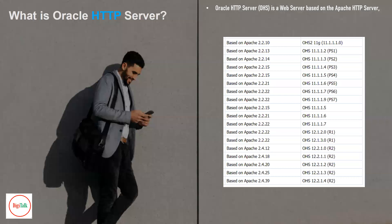Basically, in an enterprise world, we have a web server sitting in front of your application server, like Oracle WebLogic Server. It is used in front of your WebLogic server for security purposes, because your business logic is completely deployed on your application server. No one wants to allow outside users to directly connect with the application server, so a separate layer is created in front of WebLogic, which is the web server. All traffic that goes to your application server is via the HTTP server.